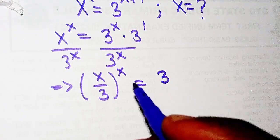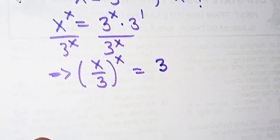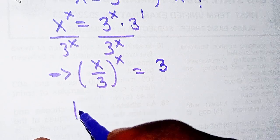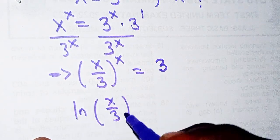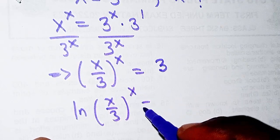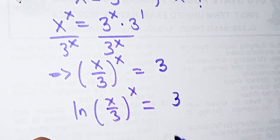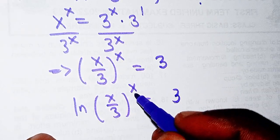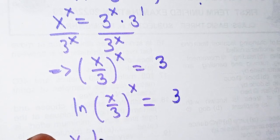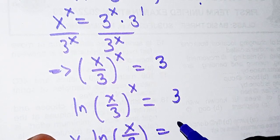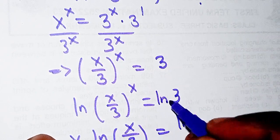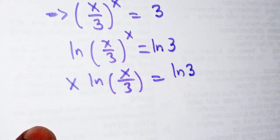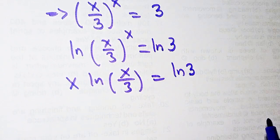Now I want to bring down this x. To do that I'm going to introduce ln to both sides of the equation. We have (x/3)^x equals 3, so taking ln of both sides gives us x · ln(x/3) equals ln(3).